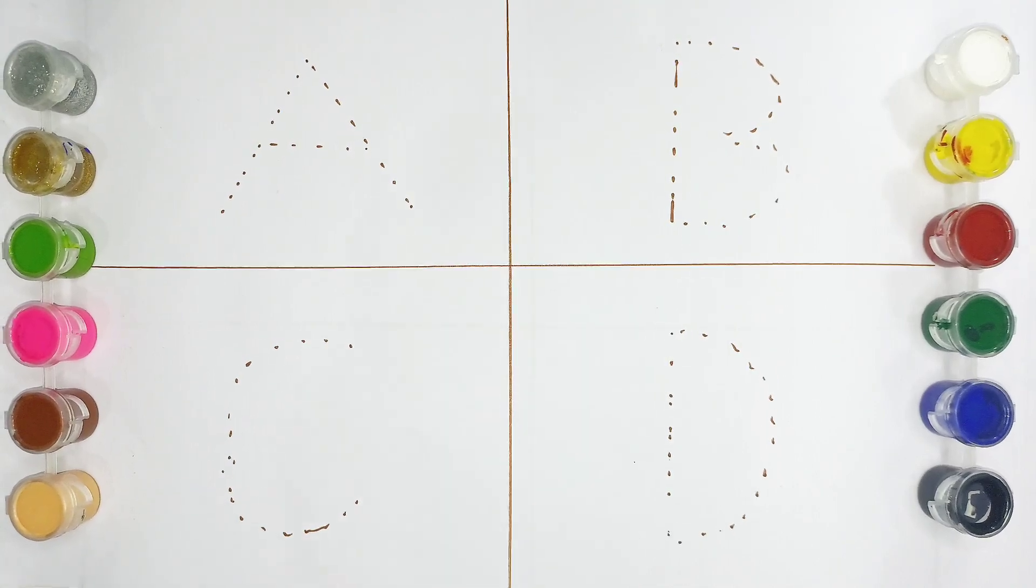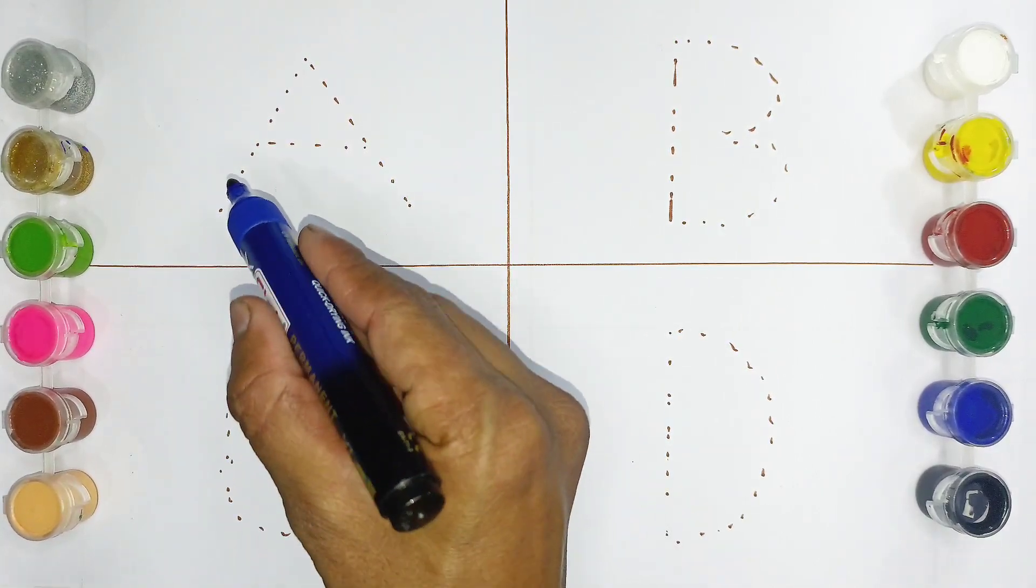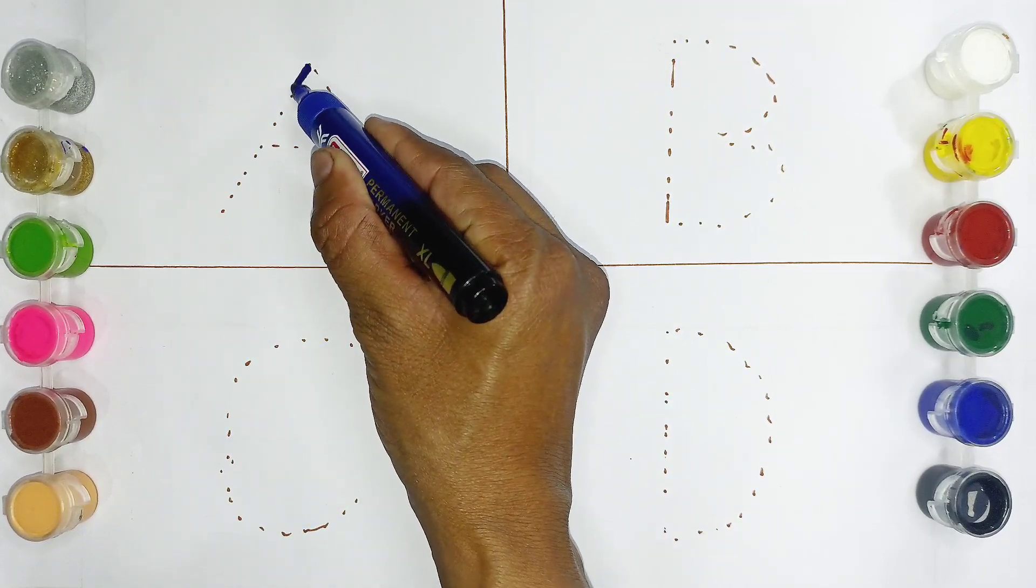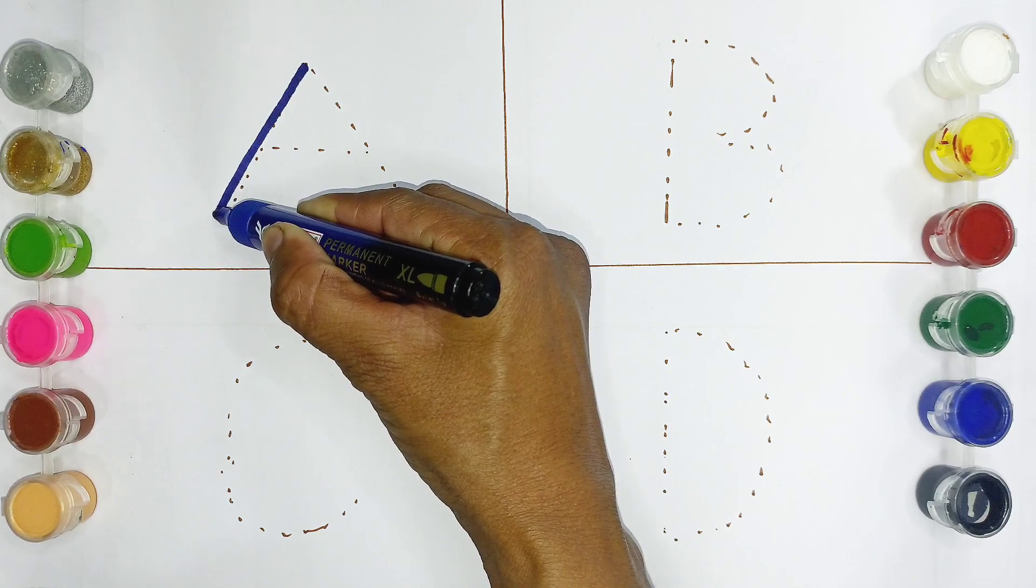Hi kids. We will learn how to write alphabet letter A. From top, draw a slanting line down to the left.